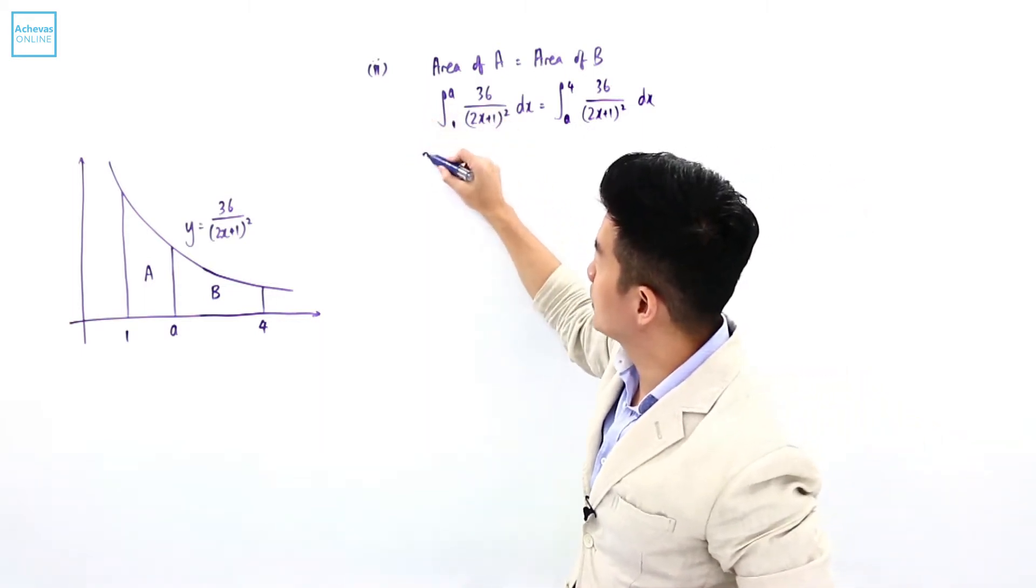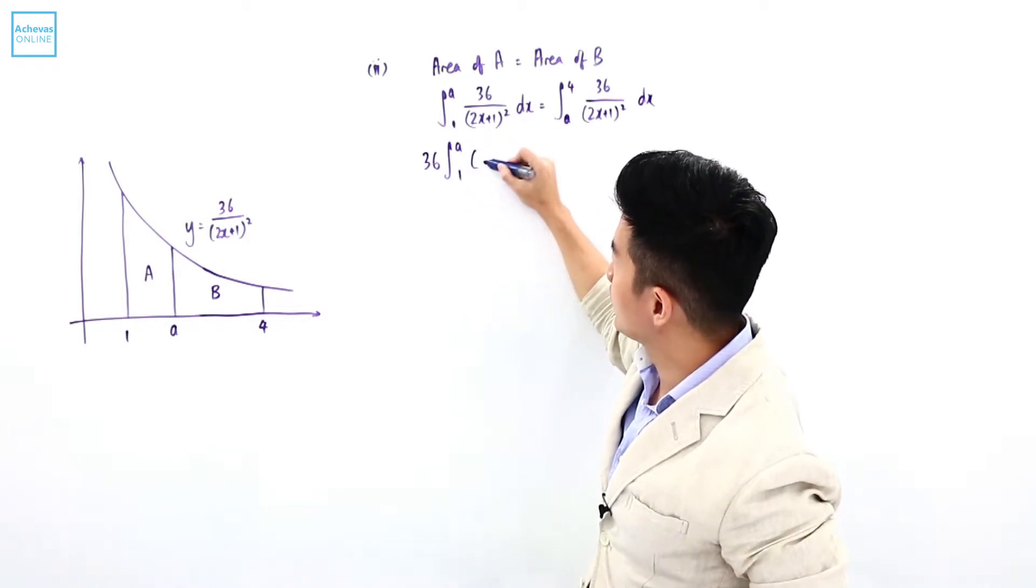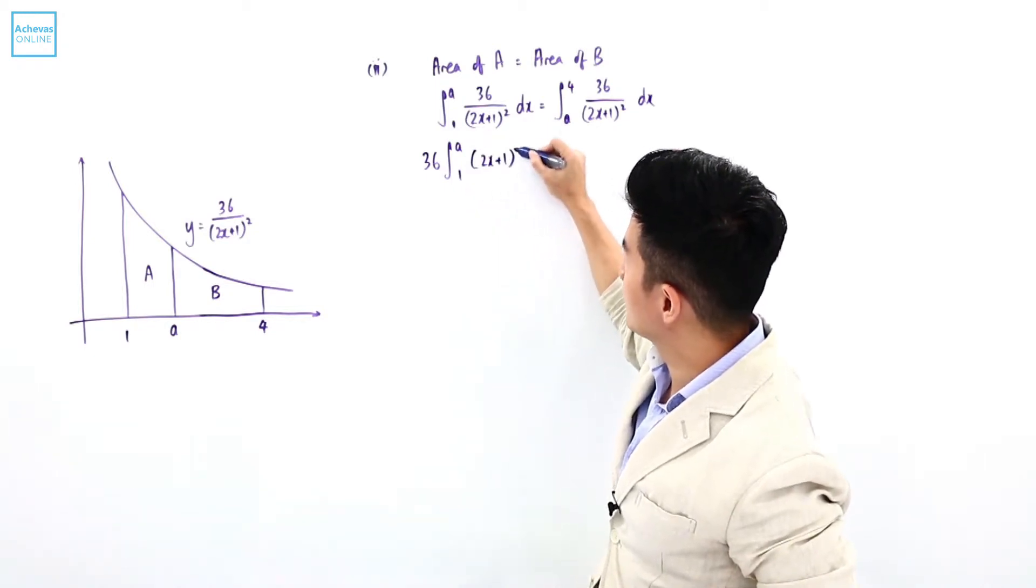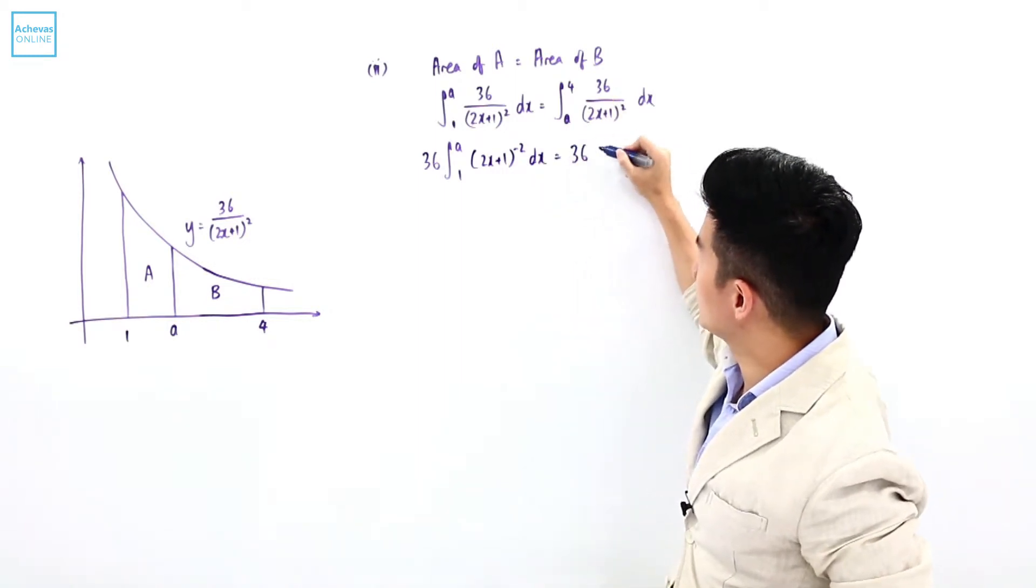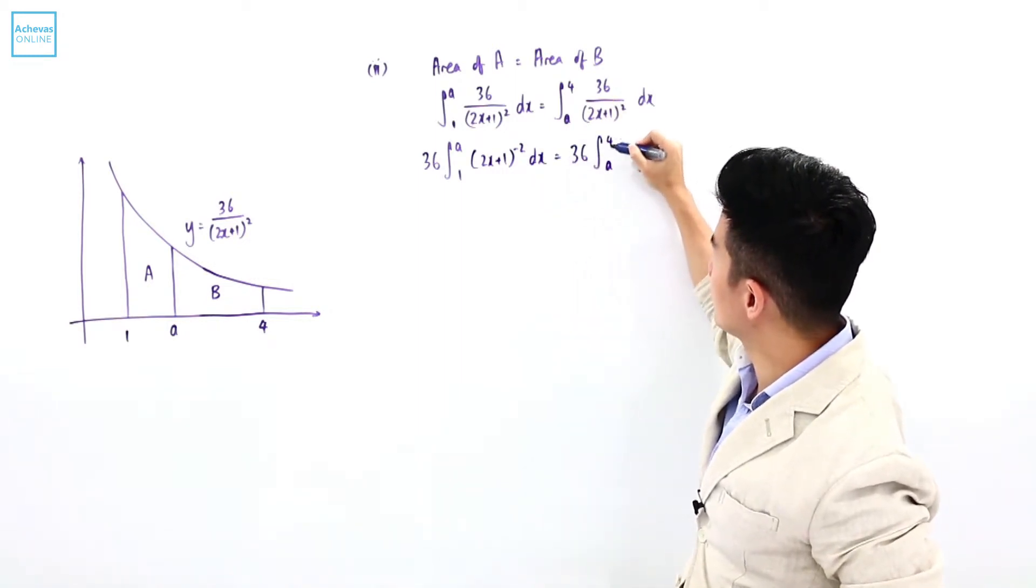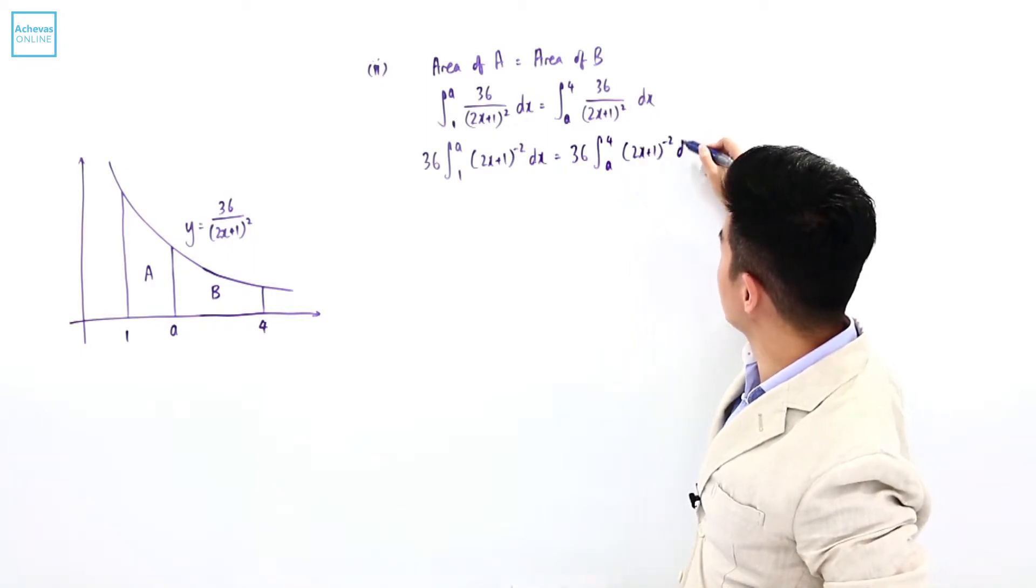I can take 36 out of the integration sign and rewrite this as (2x + 1)^(-2). Similarly, I'm going to bring 36 out of the integration sign from A to 4, and rewrite it as (2x + 1)^(-2).